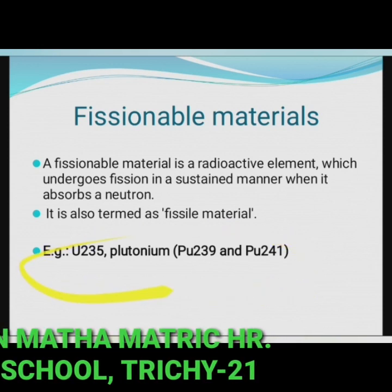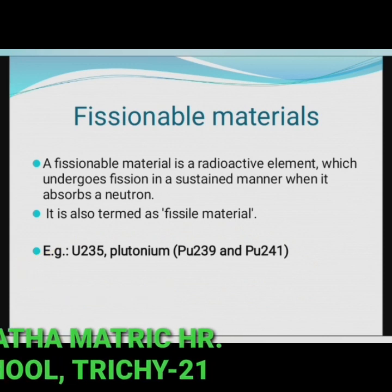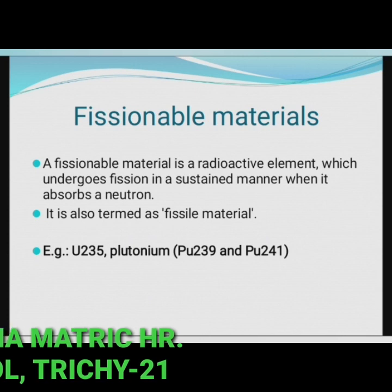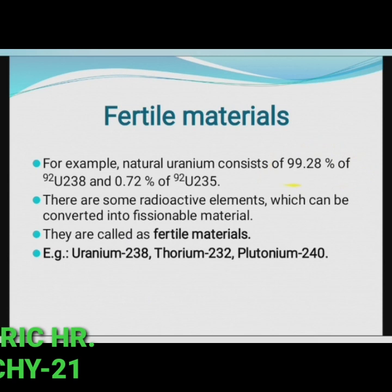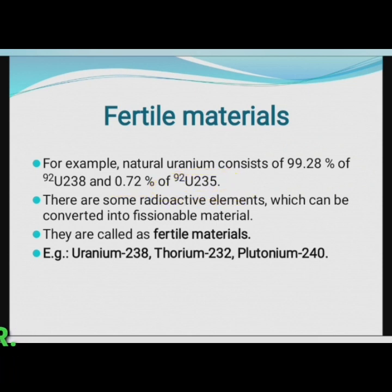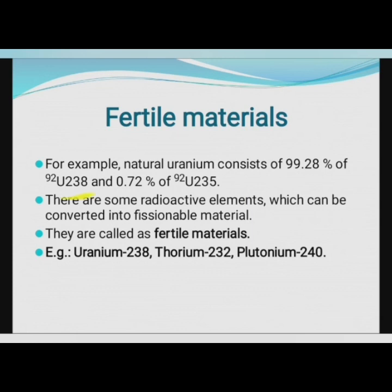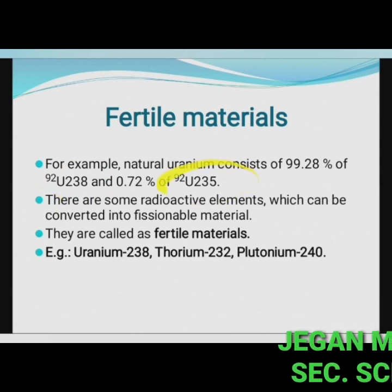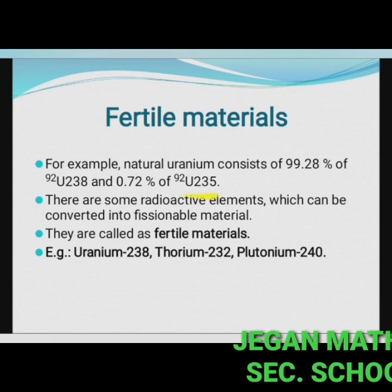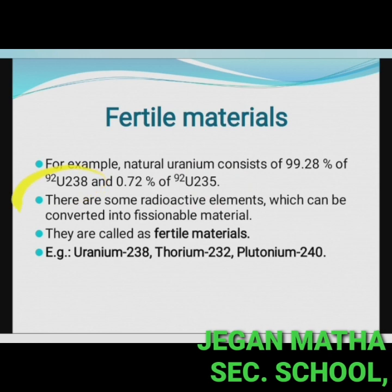These radioactive elements undergo fission in a sustained manner when they absorb a neutron. However, all isotopes of uranium do not undergo nuclear fission when they absorb a neutron. For example, natural uranium consists of 99.28% uranium-238 and 0.72% uranium-235. Of these two, uranium-238 does not undergo nuclear fission, whereas uranium-235 does. Therefore, uranium-235 is a fissionable material and uranium-238 is non-fissionable.